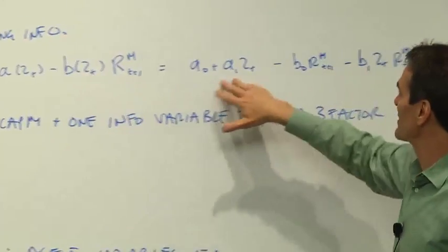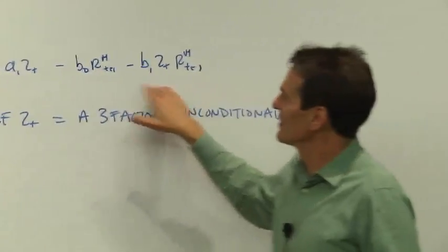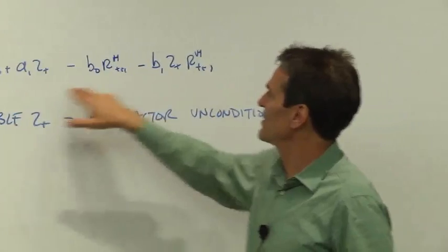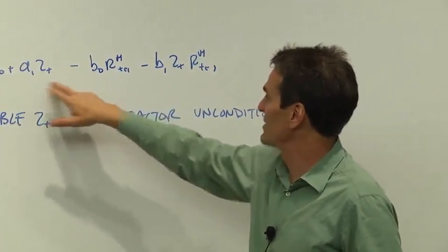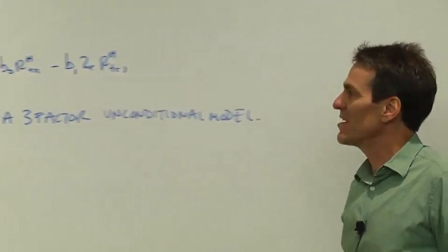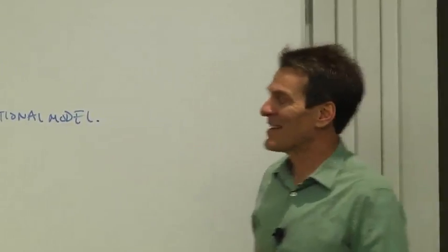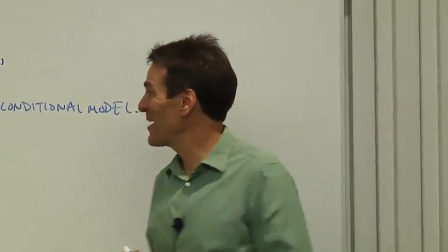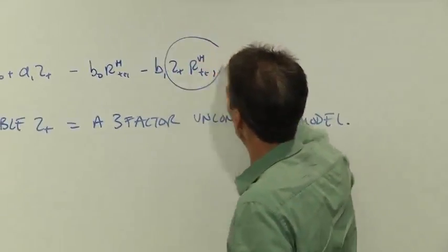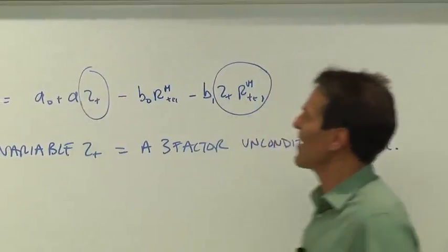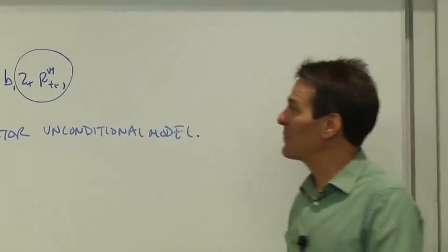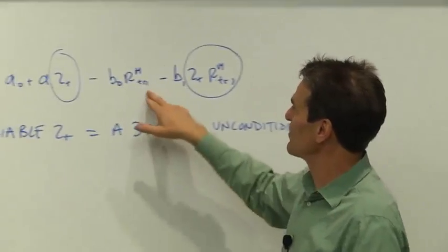So modeling the dependence of the parameters leads you to write our discount factor in this form: A0 plus A1Z, B0 plus B1Z, RT plus 1. But wait a minute. Now we've got an unconditional model again. We just have an unconditional model with a few extra factors. Instead of M being a linear function of only the market return,